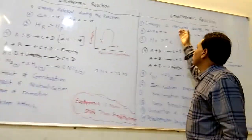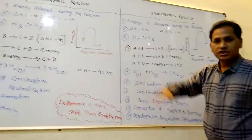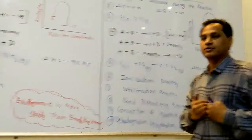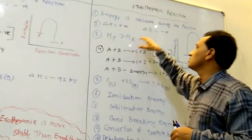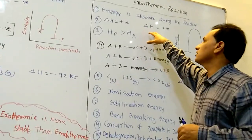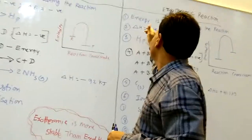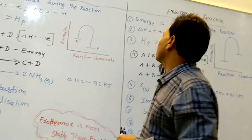What is endothermic reaction? During the reaction, the system absorbs the heat from the surroundings. That is known as endothermic reaction. Energy released is exothermic; energy absorbed is endothermic.